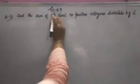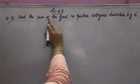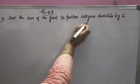Dear students, welcome back to your favorite channel, Mathelphus. This is 5.3, question number 10. Find the sum of the first 40 positive integers divisible by 6.